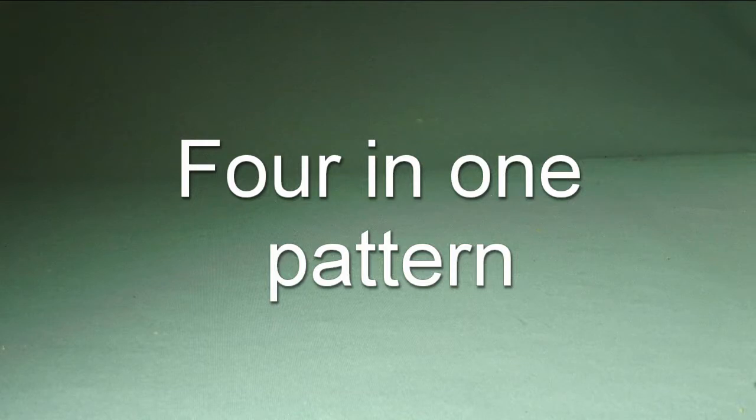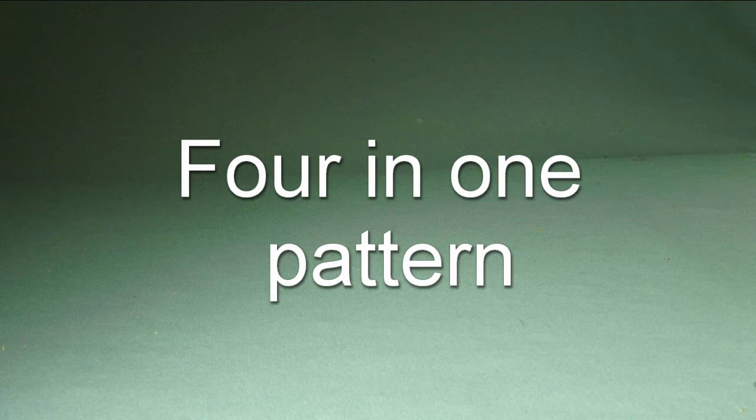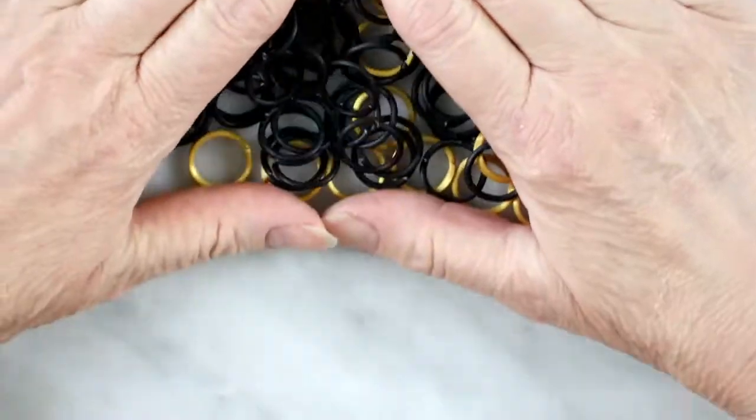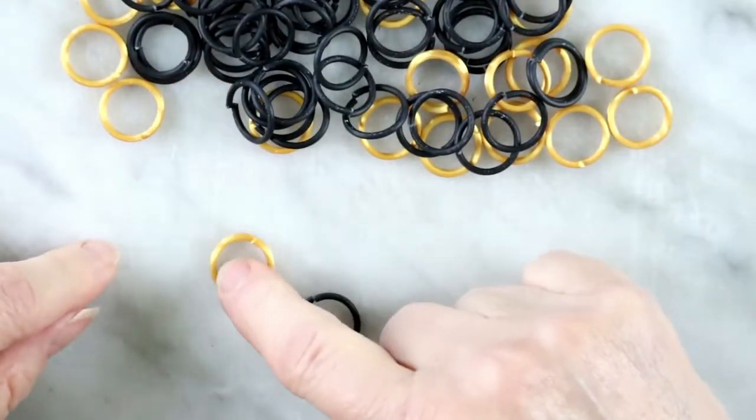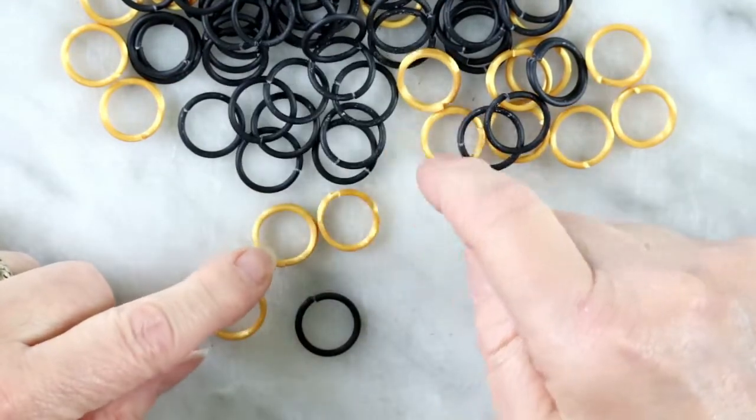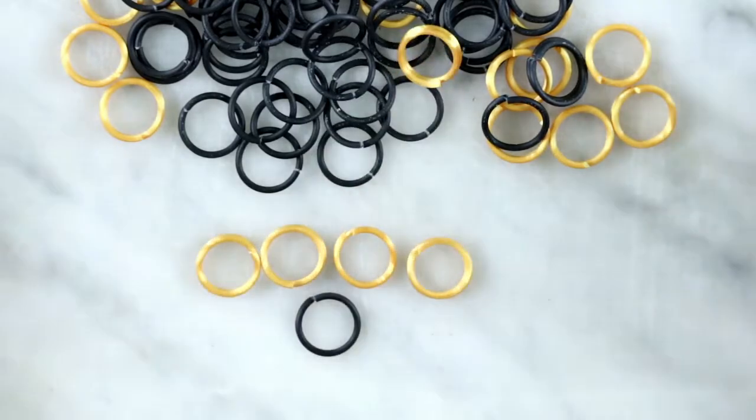I will be making the traditional European 4 in 1 pattern. But there are other patterns if you get ambitious. As the name suggests, we will use one black jump ring and put in four gold split rings.